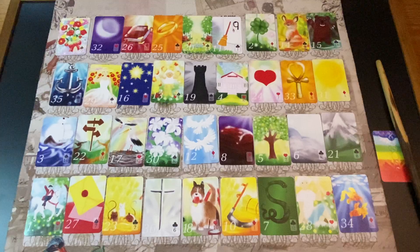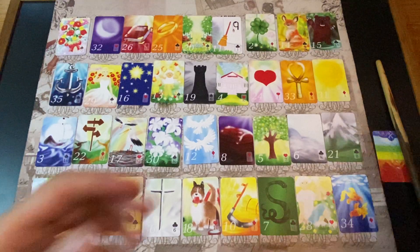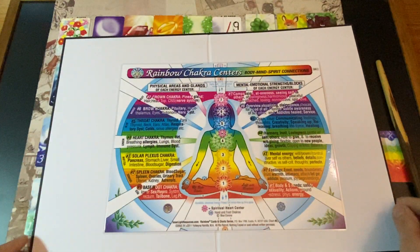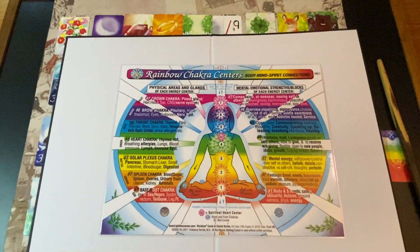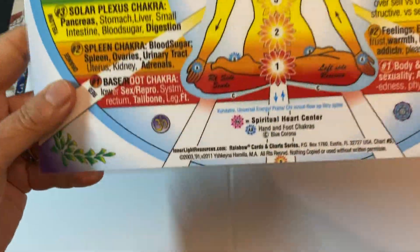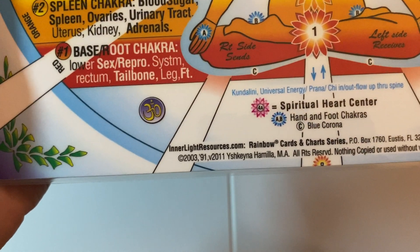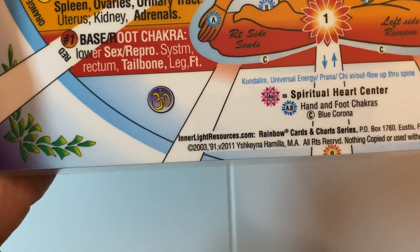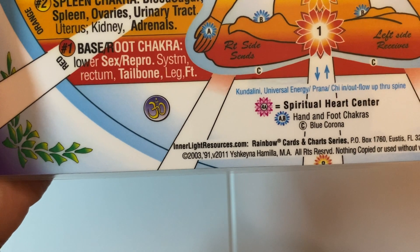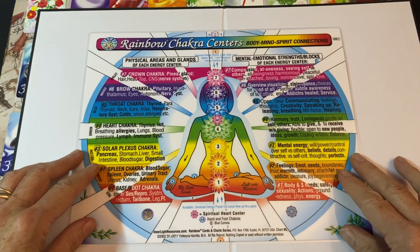While I do that I'm going to stick this under your noses — this is a nice chart, it's got a lot of information on it front and back. I got this when I was becoming a Reiki master, and you can get this from innerlightresources.com, rainbow cards and charts series.